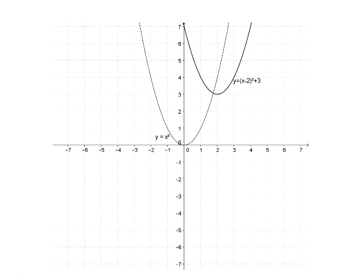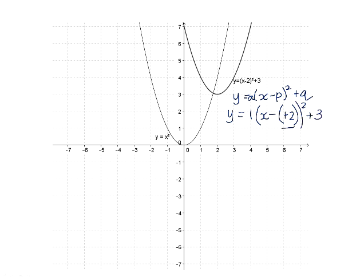If we look at a graph where we change the p and q values, bearing in mind that our standard form is a times x minus p squared plus q, we can see the a value is 1. Because we have x minus 2, the value of p itself must have been positive 2, and the q value is 3. So the turning point of the graph is at (2, 3), and we can see that all the coordinates have moved 2 units to the right and 3 units up. So the entire graph has been shifted 2 units to the right and 3 units up.